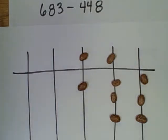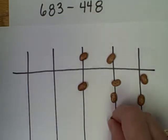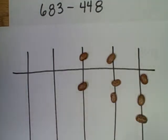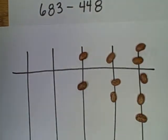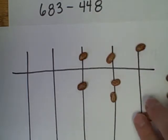Now I want to take away 448. I'll go ahead and take away eight first, but I only have three here. So what I'll do is I'll take this ten and exchange it for two fives. Now I can take away a five, six, seven, eight.